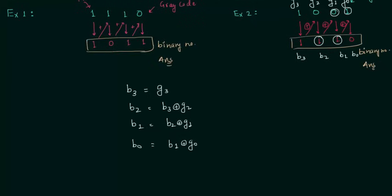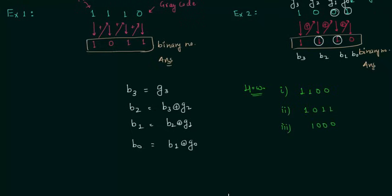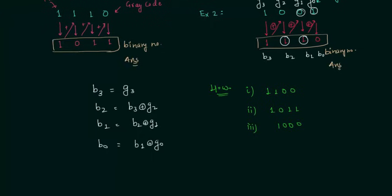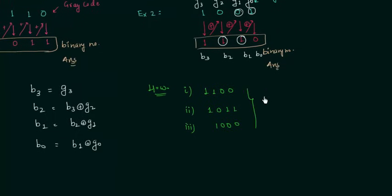Now we will move to homework problems. There are three homework problems for this lecture. In the first, the gray code is 1100. In the second, the gray code is 1011. In the third, the gray code is 1000. Convert each of these gray codes to binary and post your answers in the comment section.